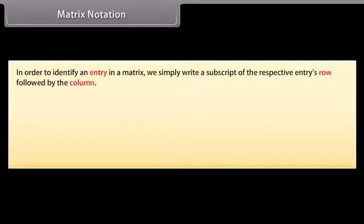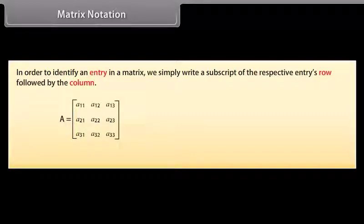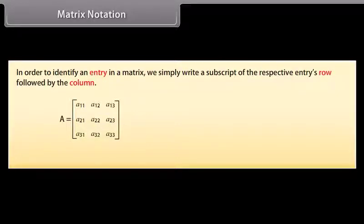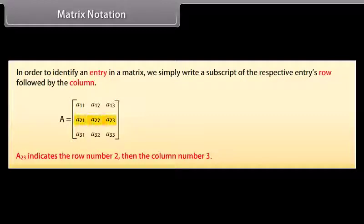Matrix notation. In order to identify an entry in a matrix, we simply write a subscript of the respective entry's row followed by the column. In matrix A, we write A₂₃ to denote the entry in the second row and the third column. A₂₃ indicates row number 2 and column number 3.